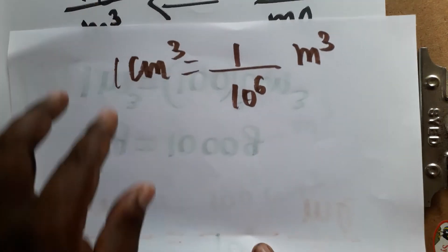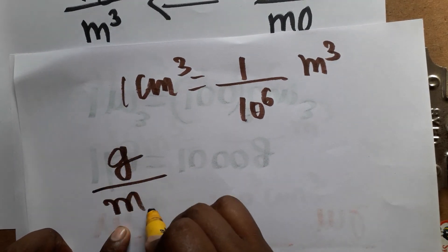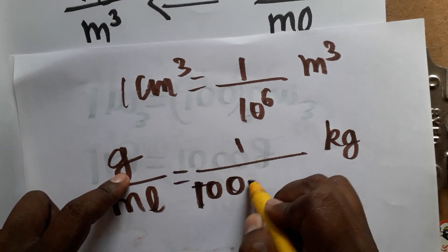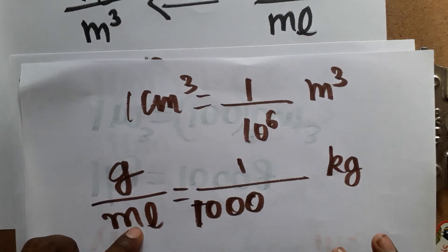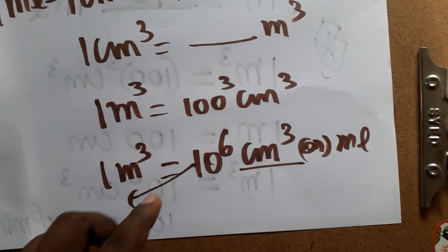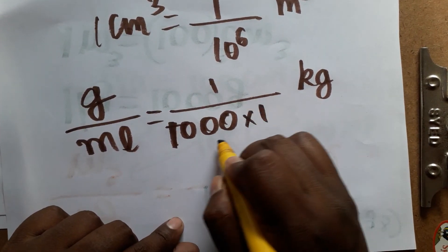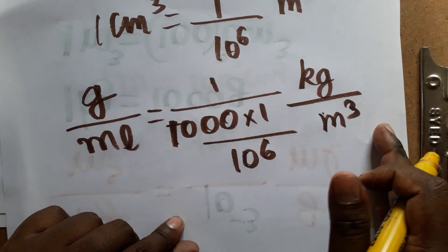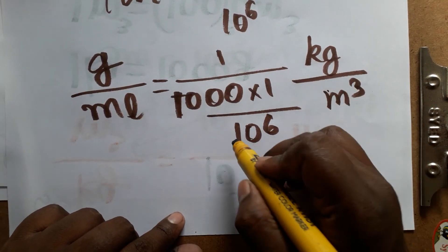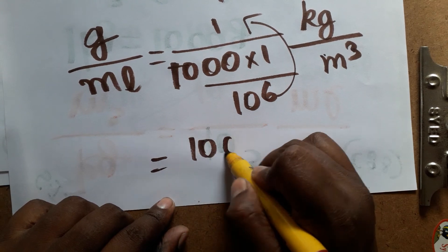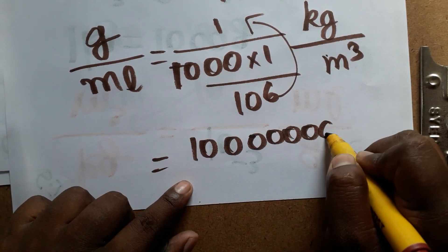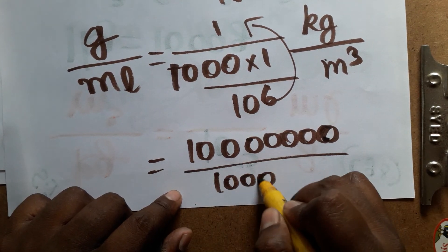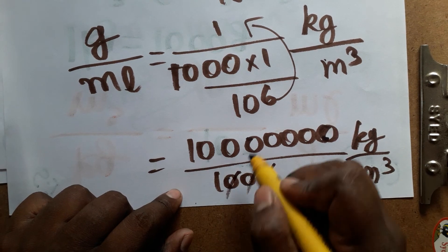Now combining both conversions: gram per mL becomes kg per meter cube. Gram to kg is divided by 1000 — that's 3 zeros. mL to meter cube is divided by 10 power 6 — that's 6 zeros. So 6 zeros divided by 3 zeros, the 3 zeros cancel out, leaving 10 power 3 in the numerator.